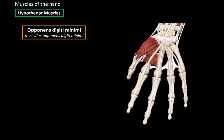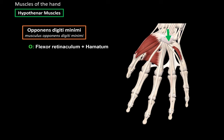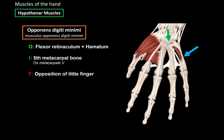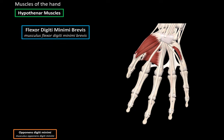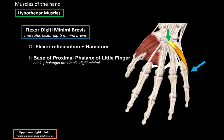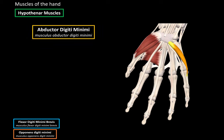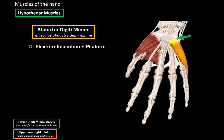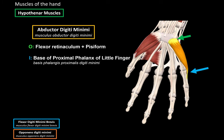Now let's do the hypothenar muscles. The first one is the Opponens Digiti Minimi. It originates from the Flexor Retinaculum and the Hamatum, and inserts at the base of the fifth metacarpal bone. Its function is opposition of the little finger — basically pulling it towards the thumb. Next we have the Flexor Digiti Minimi Brevis, which originates from the Flexor Retinaculum and the Hamatum, and inserts at the base of the proximal phalanx of the little finger. Its function is flexion of the little finger. Next we have the Abductor Digiti Minimi, which originates from the Flexor Retinaculum as well as the pisiform, and inserts at the proximal phalanx of the little finger. Its function is abduction of the little finger — pulling it away from the third finger.